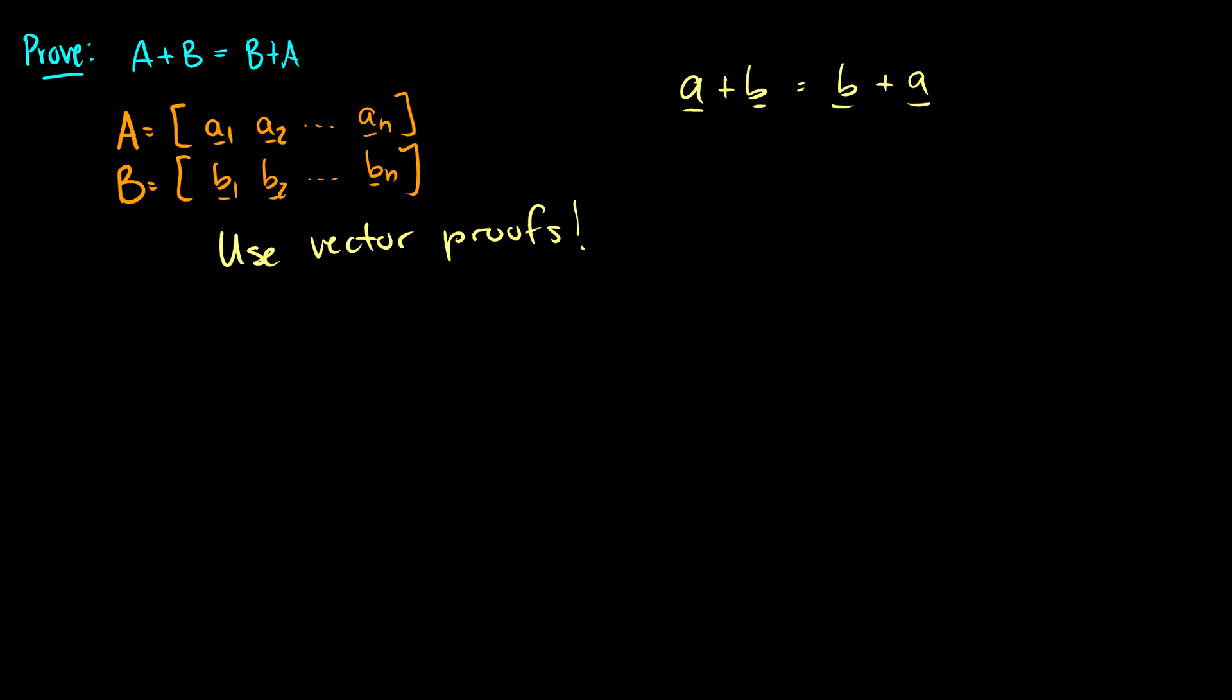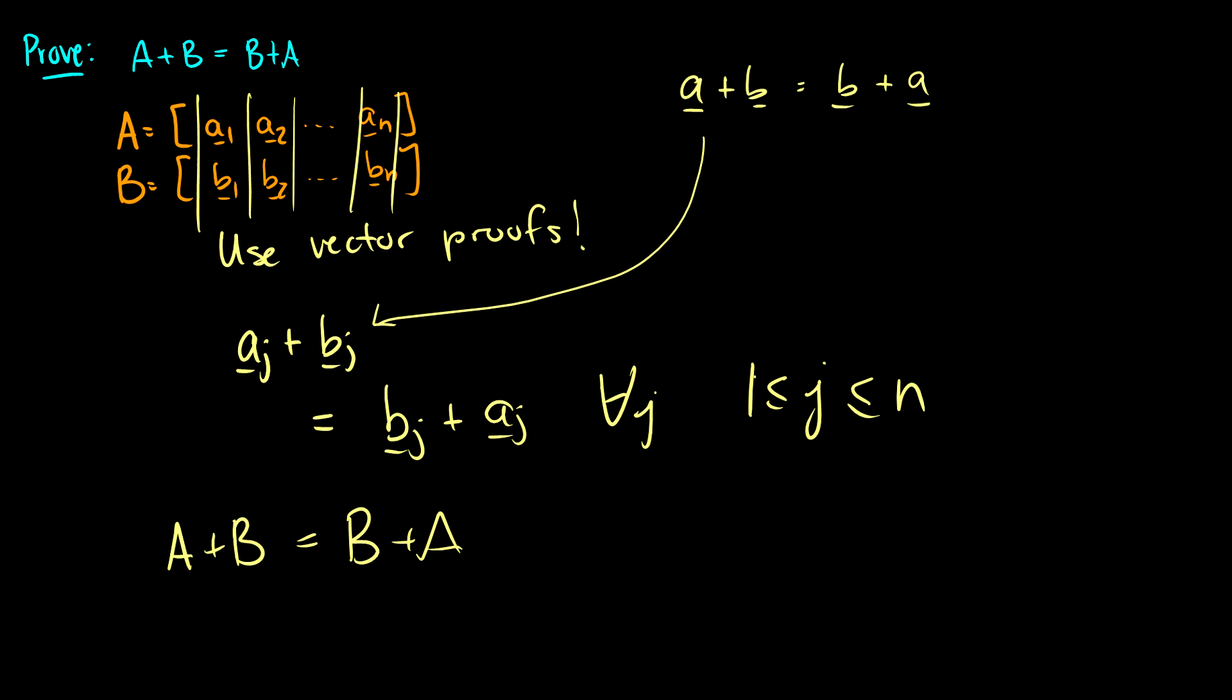So for each little matrix here, A and B, we can take one column vector. We can say, let's take vectors Aj plus vector Bj. Using our vector properties, we know that this is the same thing as vector Bj plus vector Aj. Because this holds for every single vector in our two matrices, that means we can switch the order we add them in for every single vector, which means that this A plus B is equal to B plus A. So this is for all j where j is between 1 and n. This is pretty much fully written out, use more words obviously, but the general idea is here. You can use this trick for every single proof in this list.